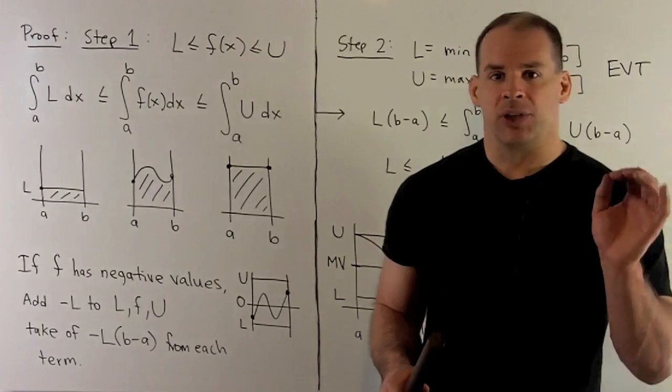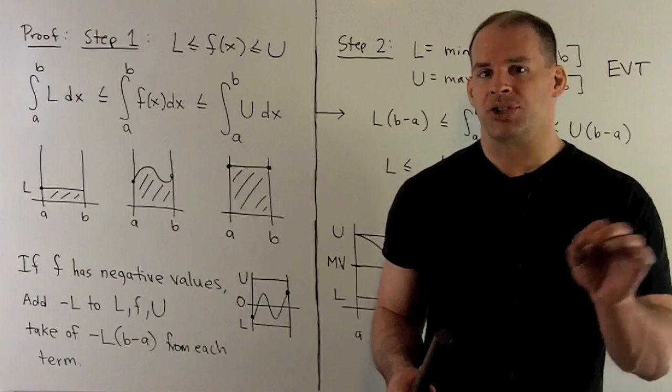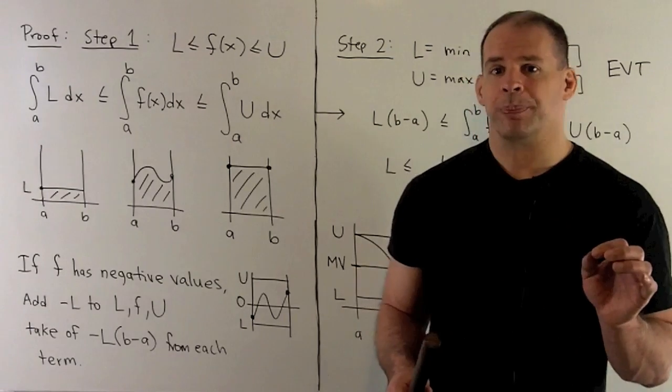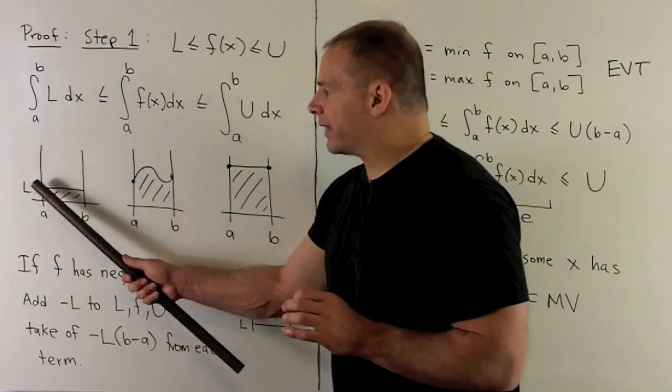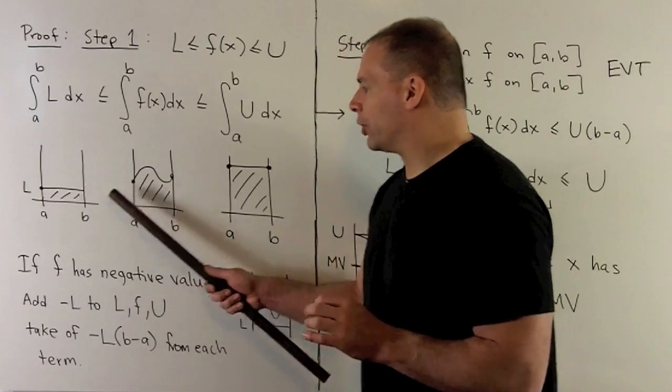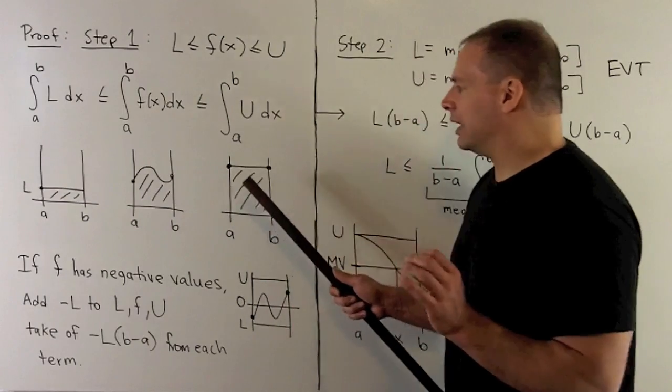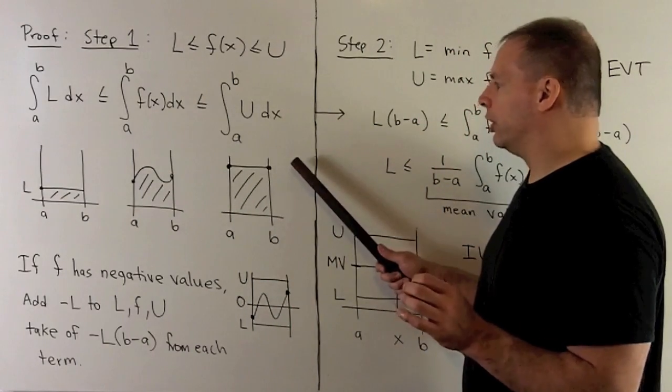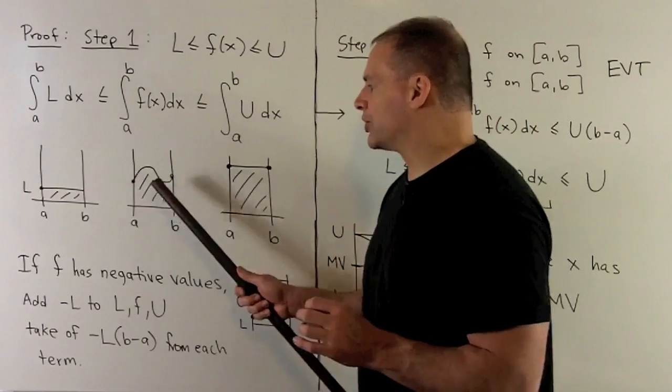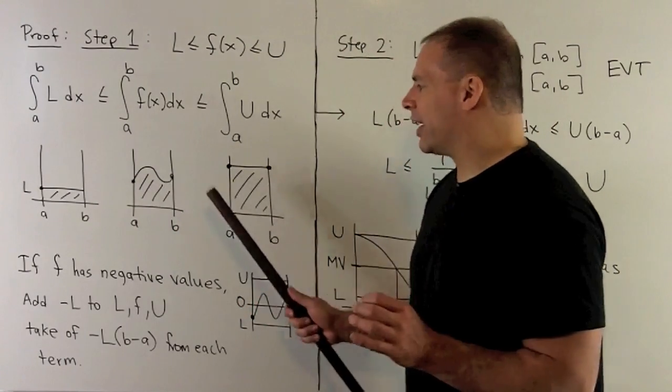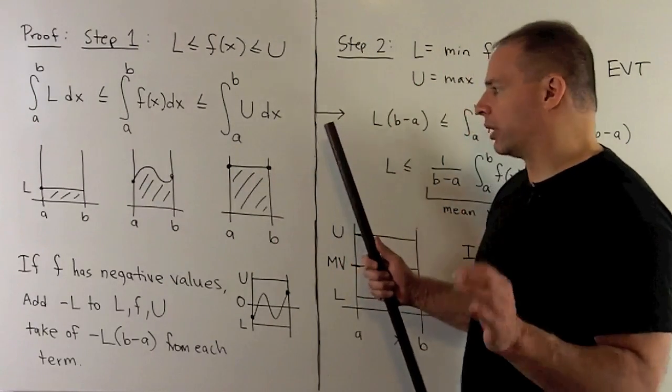Now, if L is positive, that's going to mean our function f takes on positive values. So, our graphs are going to look like this. We're going to have the graph of the constant function L underneath the graph of f. And the graph of f is going to be underneath the graph of the constant function U. So, if we take the areas under each of these, this area is less than or equal to this area. This area is less than or equal to this area. And then that's just a statement that we have here about definite integrals.